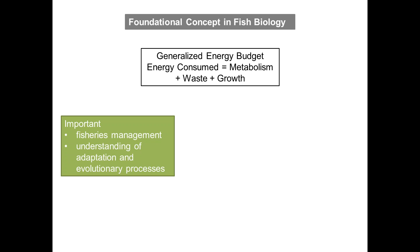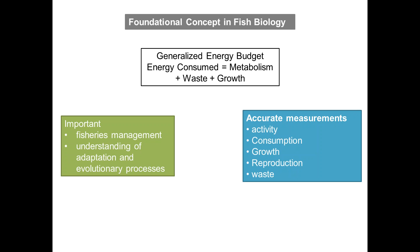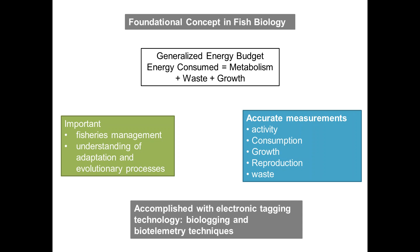Typically, what we'd like to measure is activity, consumption, growth, reproduction, and waste. It's crucial that we get as accurate measurements as possible for these parameters. This is now accomplished with electronic tagging technologies, such as biologging and biotelemetry techniques.